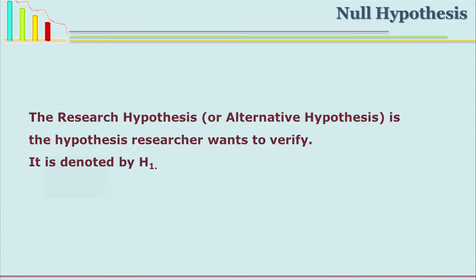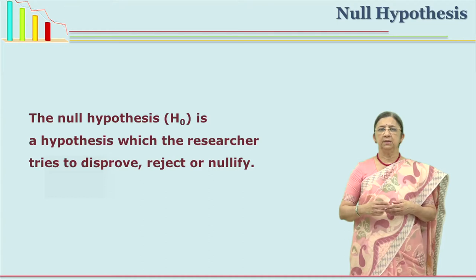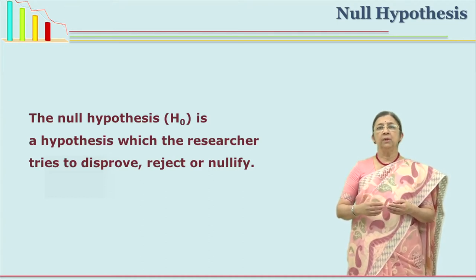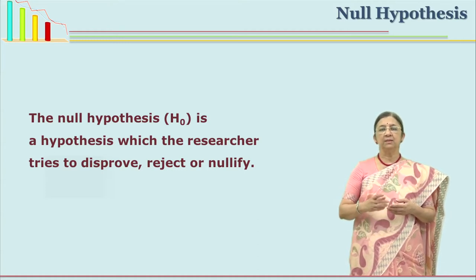The research hypothesis H1, which is also called the alternate hypothesis, must be there, because when you reject the null hypothesis, what are you going to accept and verify? So the researcher must state the alternate hypothesis or H1 hypothesis first and then derive the null hypothesis from that. You cannot start with null hypothesis because when you reject it, what you are going to accept is the original alternate hypothesis, H1. The null hypothesis is the hypothesis which we are trying to reject, which we are trying to disprove.